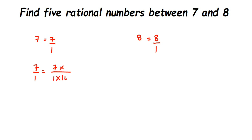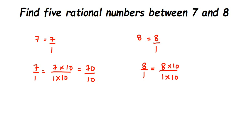So 7 by 1, multiplying both numerator and denominator by 10, gives us 70 by 10. Similarly, 8 by 1 multiplied by 10 gives 80 by 10. Make sure you use the same multiplier for both numbers so the denominators are equal — just as when solving other problems, the denominators must be the same.